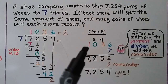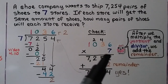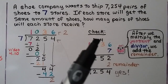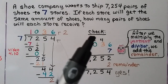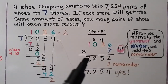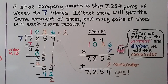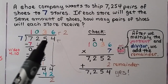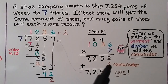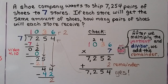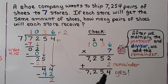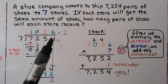We can check this by multiplying our quotient by our divisor. We do 7 times 6, which is 42 — regroup the 4 and write the 2 down. Then 7 times 3 is 21, plus 4 more is 25 — regroup the 2 and put the 5 down. We do 7 times 0, which is 0, but we need to add the regrouped 2, so that's 2. Then 7 times 1 is 7. We have 7,252. But our dividend was 7,254, so we need to add that remainder of 2 — we get 7,254. It matches our dividend, so yes, we have the correct answer.